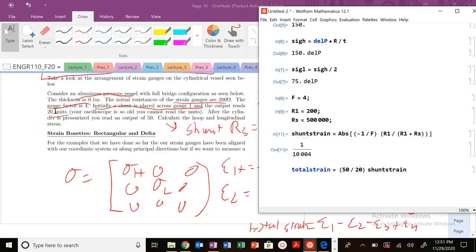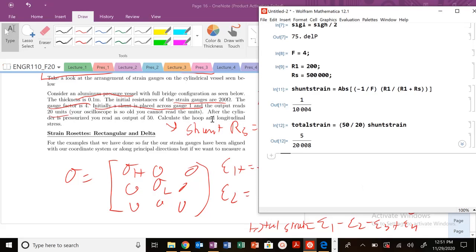Because again, at this strain, when we close the switch, we were at an output of 20. Once we pressurize, we were at an output of 50. So that new strain, the strain that's induced once we pressurize that pressure vessel, that is going to be this strain right here. So that is going to be my total strain.